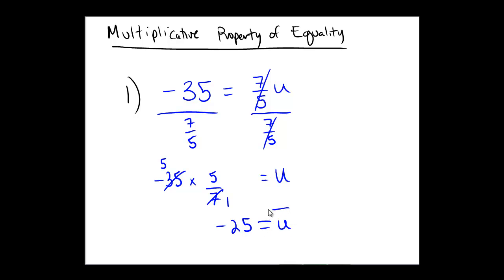It looks like the answer here is negative 25 equals u, or by the symmetry property of equality, I usually like to write this as u equals negative 25.